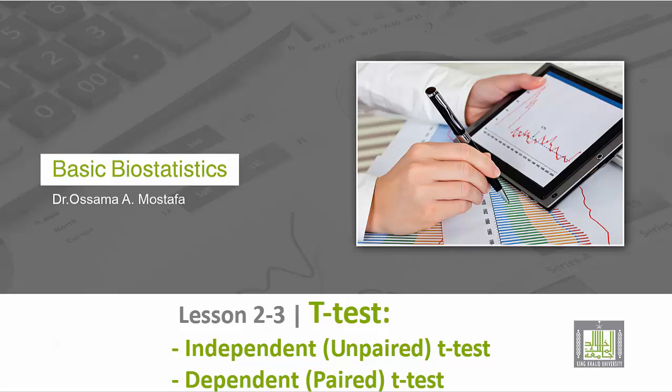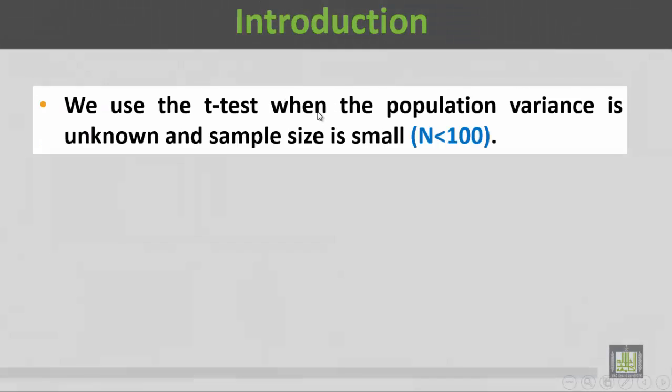This is the third lesson in the second unit: the t-test. We have two types of t-tests. The first is the independent t-test, or the unpaired t-test, and the second type is the dependent or paired t-test. We use the t-tests when the population variance is unknown and the sample size is small, less than 100.